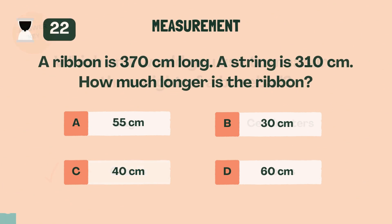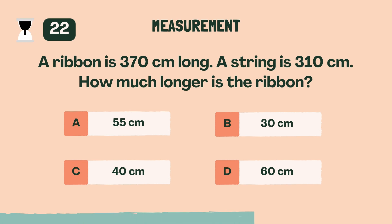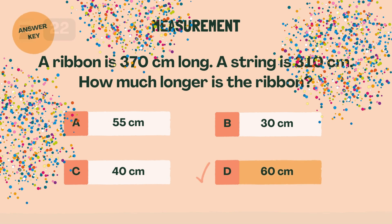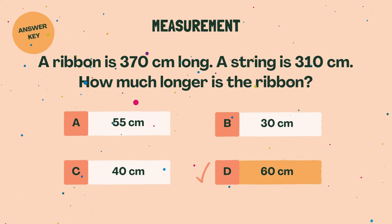A ribbon is 370 centimeters long. A string is 310 centimeters. How much longer is the ribbon? D. 60 centimeters.